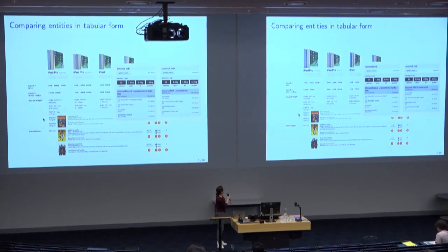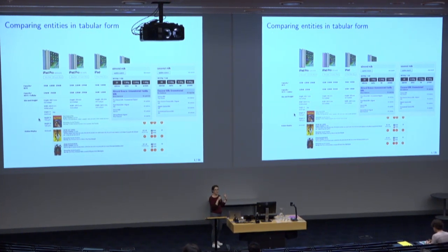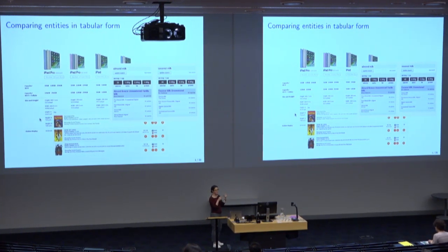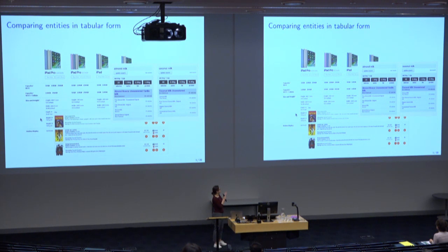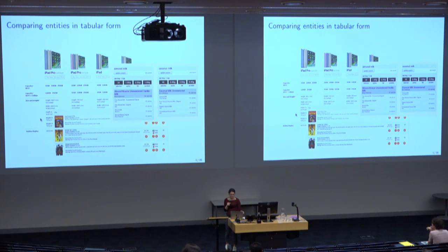For instance, when you compare movies, you compare the director and the year of release. When you compare retail items, you compare the size, price, et cetera. This handcrafted approach does not fit graph data very well. There are a couple of attempts to perform entity comparison over graph data.